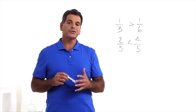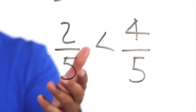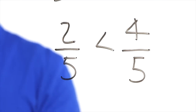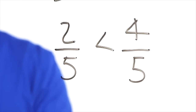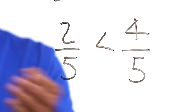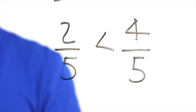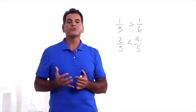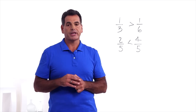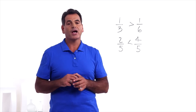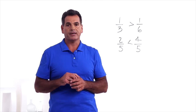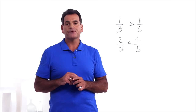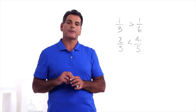Conversely, students learned that two-fifths is less than four-fifths, because two-fifths is two one-fifths and four-fifths is four one-fifths, and two is less than four. For most students, comparing fractions with the same denominator is the easier concept to understand. Now let's look at comparing fractions with different numerators and denominators.